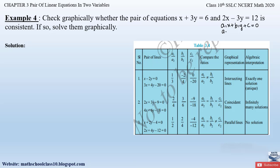Here a₁, a₂, b₁, b₂, c₁, and c₂ are the coefficients in these two pairs of linear equations. To determine whether the two equations are consistent or not — consistent means they should have one or more solutions.